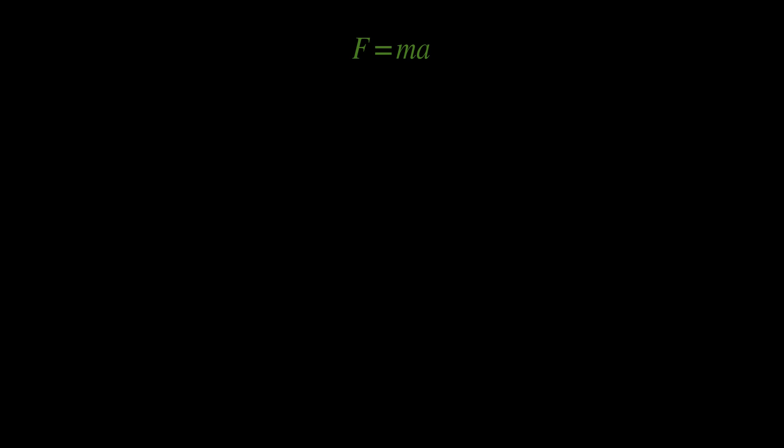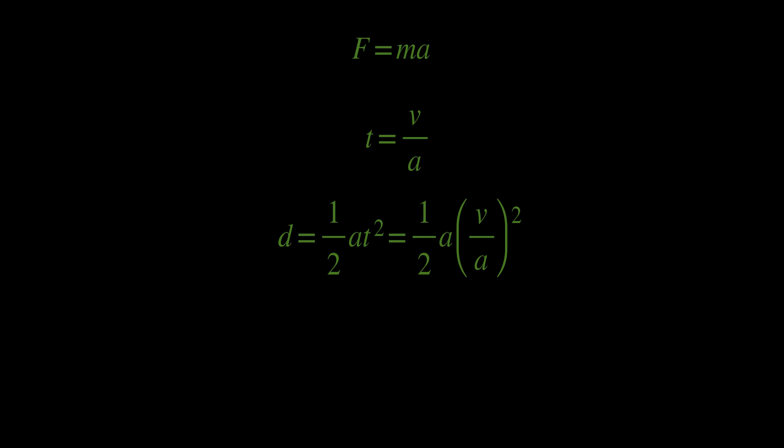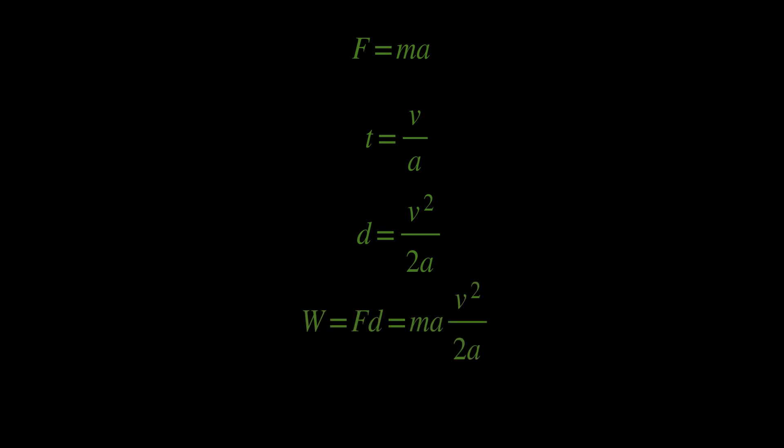Now let's derive the formula for kinetic energy, which is probably the most unmotivated formula in classical mechanics. I'll prove it in two ways: a basic way and a more insightful one. Starting with the basic approach: using the definition of force and work. Since f equals ma and acceleration equals v over t, assuming the body starts from rest, then t equals v over a, and distance d equals ½at², which becomes d equals v² over 2a. Using work equals force times distance: W equals ma times v² over 2a, so kinetic energy equals ½ mass times velocity squared.